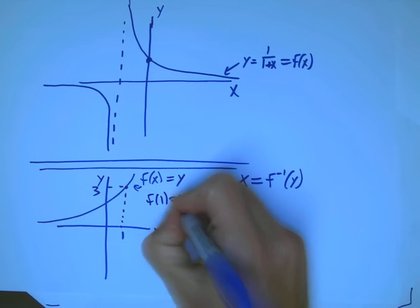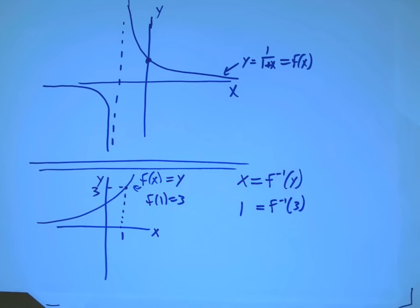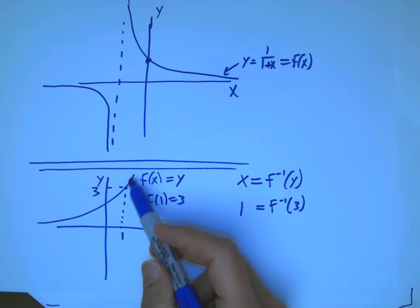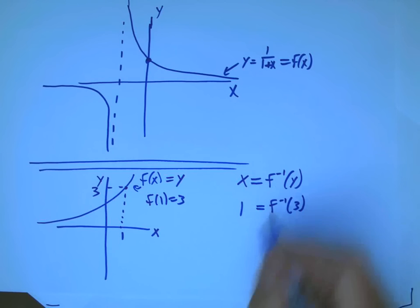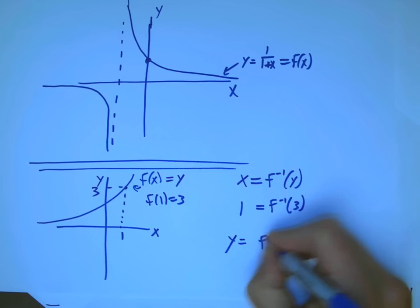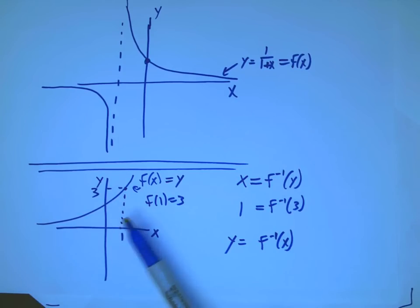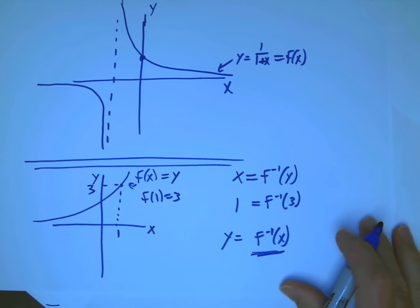If f of 1 equals 3, f inverse of the output gives you back the input. So in a sense, this graph is kind of the graph of the function and the graph of the inverse function at the same time. But here's where the letter switch actually becomes really important. Because I actually want to get a new graph. I want to get a graph of y equals f inverse of x.